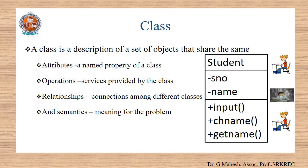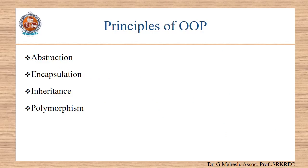Relationships is a connection among different classes like association and inheritance. The objects with the same kind of relationships with other objects are grouped into one class. Finally, semantics is the meaning for the problem at hand. The objects with the same semantics are grouped into one class. Like animals are grouped into animal class but not human beings. Next comes principles of OOPs.